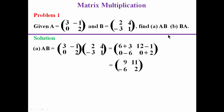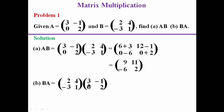We now find BA. For BA, we bring matrix B first, then followed by matrix A. We do the same thing: pick the first row and the first column, multiply and sum up the corresponding elements. 2 times 3 gives 6.